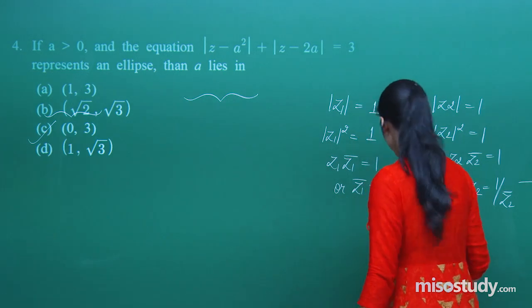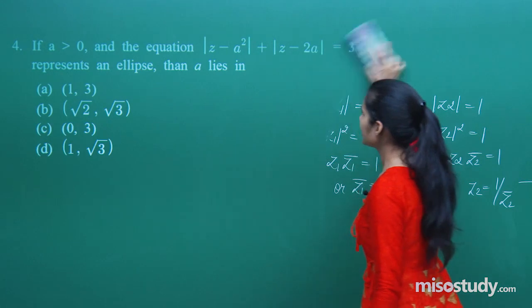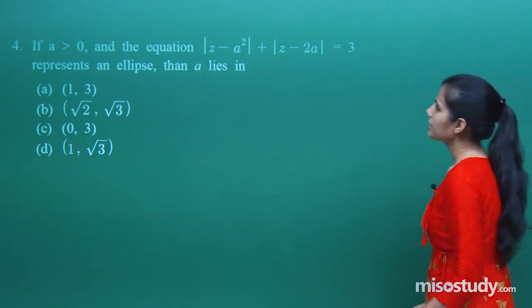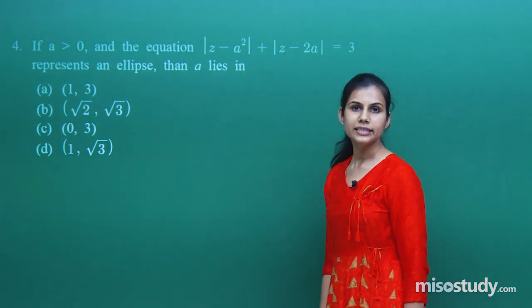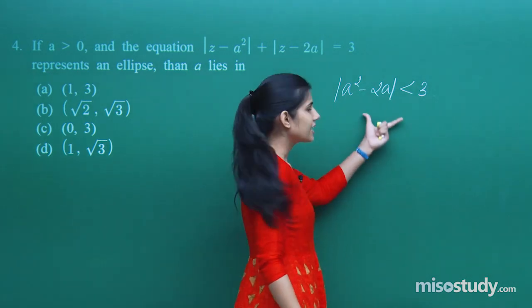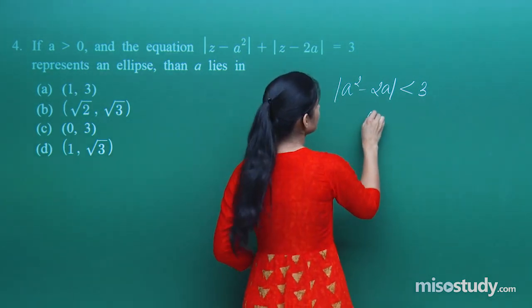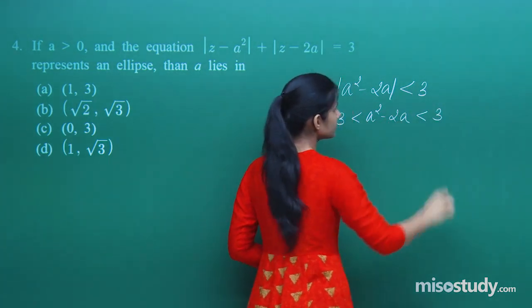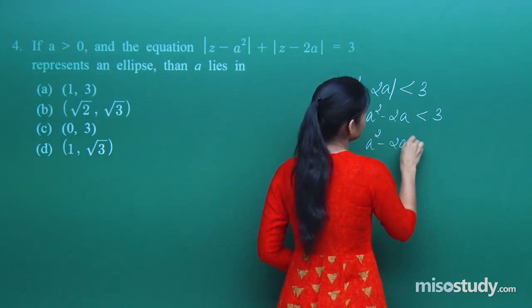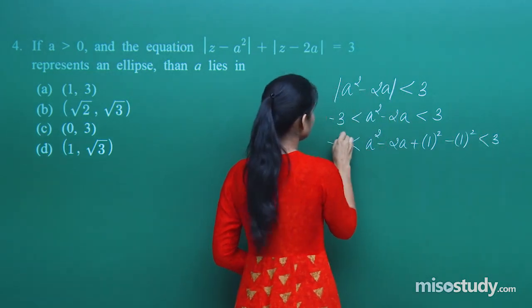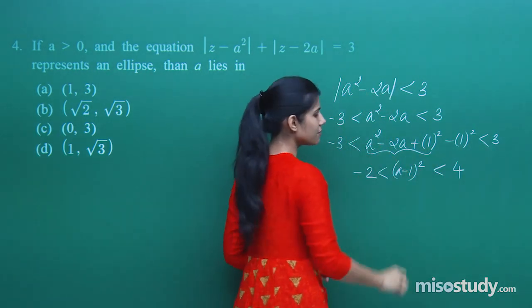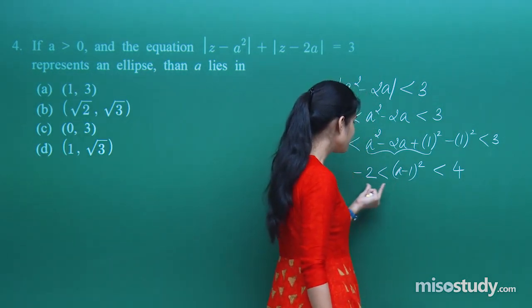Next question: if a is greater than 0 and the equation mod of z minus a squared plus mod of z minus 2a equals 3 represents an ellipse, then a lies in which interval? For this equation to represent an ellipse, the condition is that mod of a squared minus 2a must be less than 3. This means a squared minus 2a is greater than minus 3 and less than 3. Completing the square gives a squared minus 2a plus 1, i.e., a minus 1 whole squared minus 1, lying between minus 3 and 3.